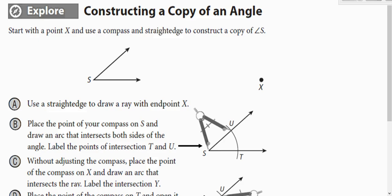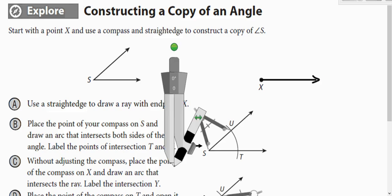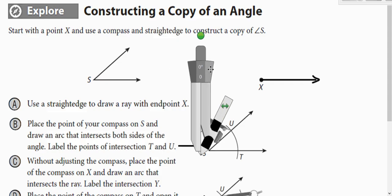So first thing you're going to do, similar to what we did with line segments, is you're going to use your straightedge to draw a ray with an endpoint X. So make that a ray, use your straightedge. This ray that we just drew is going to be kind of like the bottom of the angle that we're copying it to.